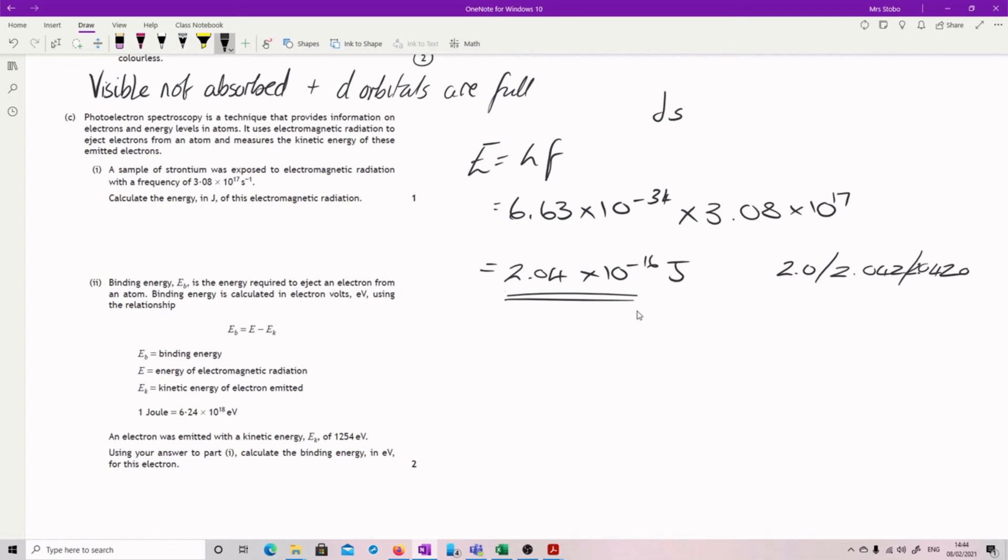Next question. Binding energy is the energy required to eject an electron from an atom. Binding energy is calculated in electron volts using this relationship. So we've got the binding energy is equal to the energy of the electromagnetic radiation, which we've calculated, minus the kinetic energy.